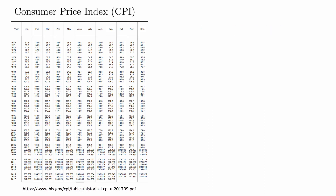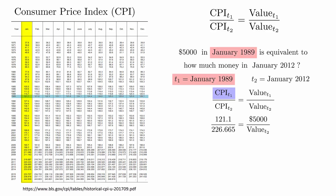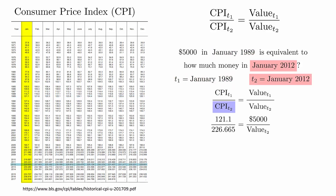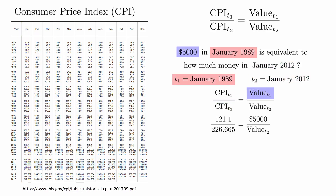The CPI can be used to estimate the value of money at different times by setting up a simple proportion. For example, suppose you won a $5,000 prize in January 1989. What is the equivalent to that prize in January 2012? The CPI was 121.1 in January 1989 and 226.665 in January 2012. By solving for the remaining variable, we can see that the equivalent amount of money in 2012 is $9,358.59.